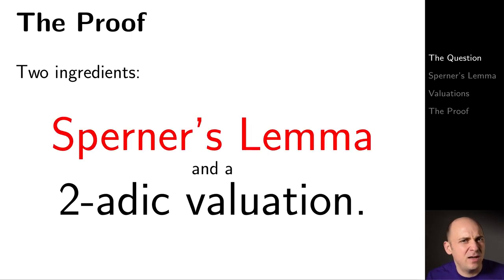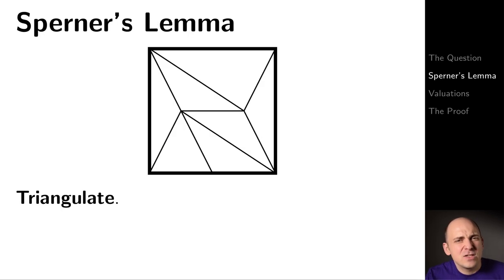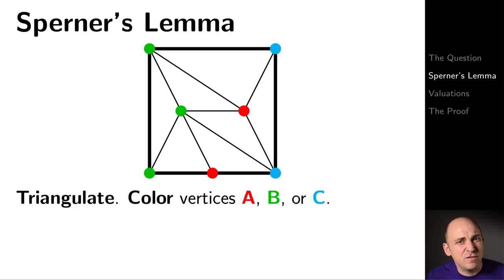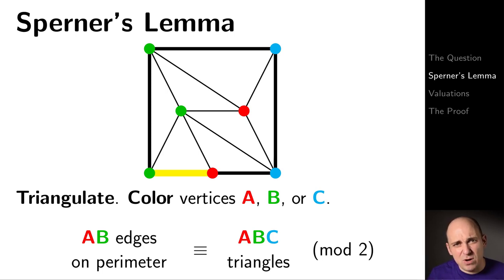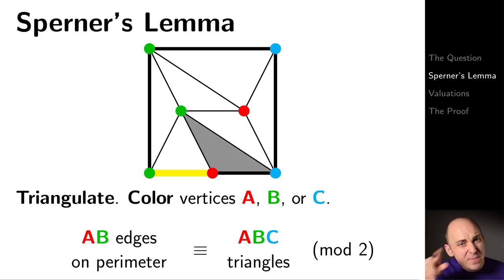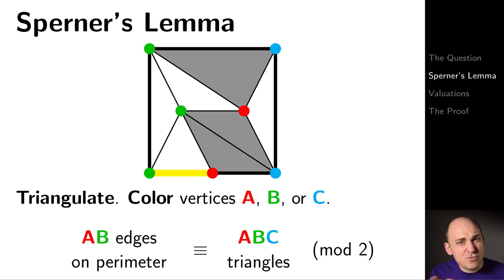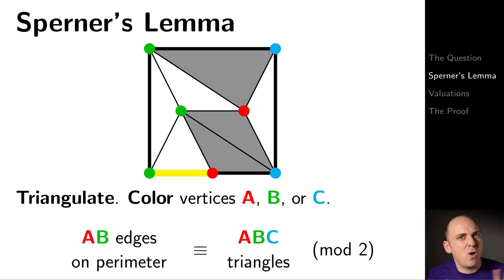So let's tackle Sperner's lemma first. If we triangulate a square — meaning cut it up into triangles — and then color each of the vertices either A, B, or C, then the number of AB edges on the perimeter and the number of ABC triangles have the same parity, i.e., they are congruent modulo 2. An AB edge on the perimeter means an edge with one vertex colored A and one colored B. An ABC triangle means a triangle with vertices colored A, B, and C — sometimes called complete triangles because all three colors are used.